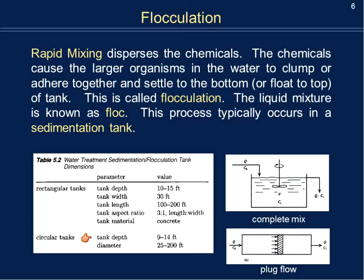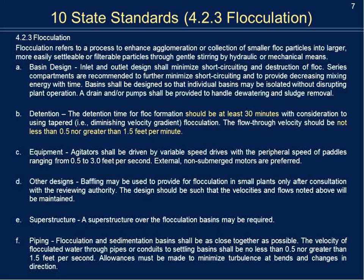For a circular tank, the depth is typically between 9 and 14 feet, and the diameter can range from 25 to 200 feet — a substantial difference depending on how many tanks you're running and how much property you have. The Ten State Standards we need to adhere to in New York particularly concern detention time and flow-through velocity. Detention time should be at least 30 minutes, and flow-through velocity should be no less than 0.5 and no greater than 1.5 feet per minute.